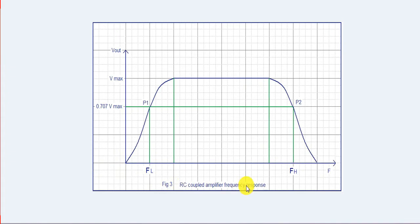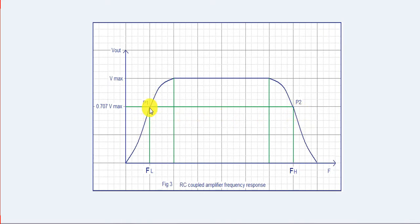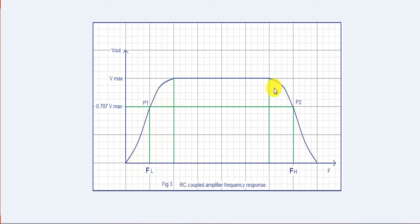Now we will see the frequency response of the RC coupled amplifier. At extremely low and extremely high frequencies, the voltage gain drops. But at mid-range frequencies it remains constant. Points P1 and P2 are the cutoff frequencies — below P1 and above P2 the transistor does not respond efficiently. Between the lower and higher cutoff frequencies it responds efficiently. The difference between the higher and lower cutoff frequencies is defined as bandwidth.